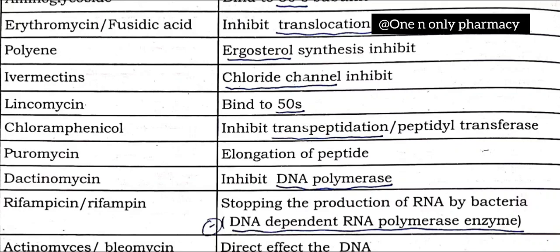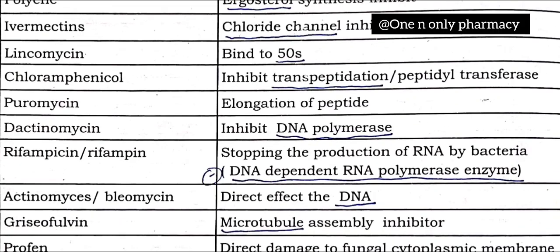Chloramphenicol inhibits transpeptidation via peptidyl transferase inhibition. Puromycin causes premature elongation of the peptide chain. Dactinomycin inhibits DNA polymerase.